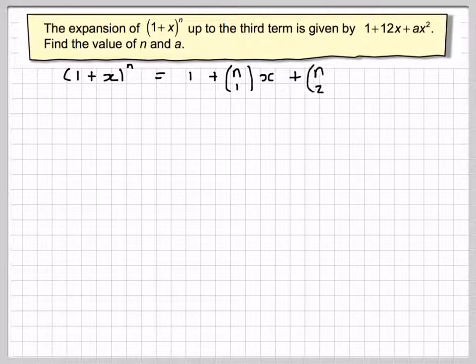So, from our knowledge of the binomial expansion, (1 + x)^n equals 1 + nC1·x + nC2·x² and so on.